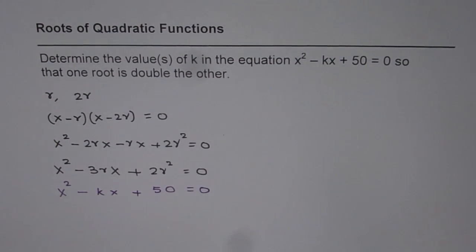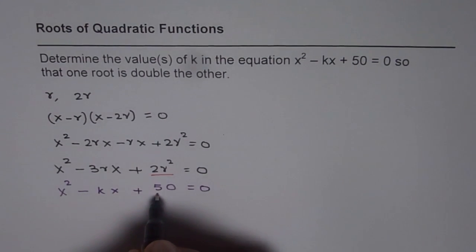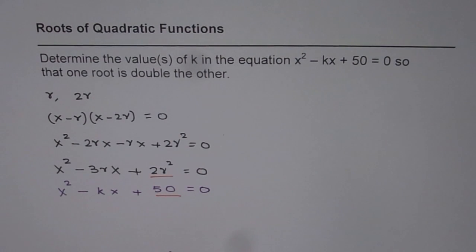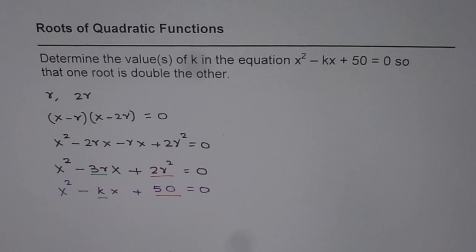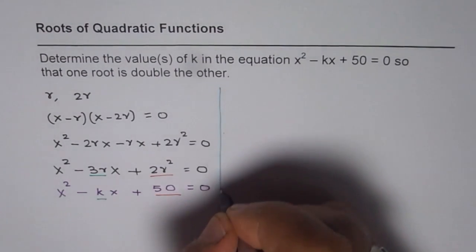We can compare their coefficients. We can compare 2r² with 50, then find the value of r, and after that, we can compare the coefficients for x, that is 3r, and get the value of k. That is the strategy which we are going to follow to solve this problem.